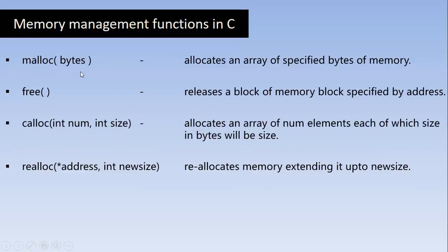The bytes, which is an integer, specifies the total number of bytes the memory is going to have. calloc takes two parameters: num and size. It allocates the number of blocks specified by num, each of which has a size specified by size. For example, calloc(2,2) gives two blocks. calloc allocates multiple blocks whereas malloc allocates a single block — that is why calloc stands for contiguous allocation.